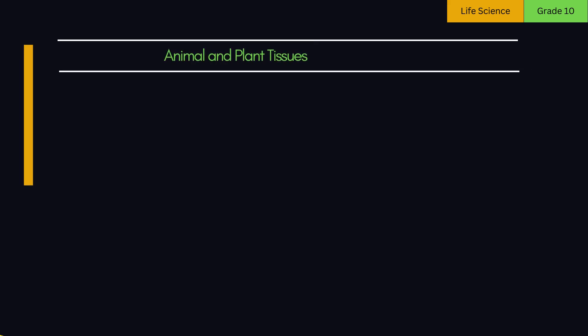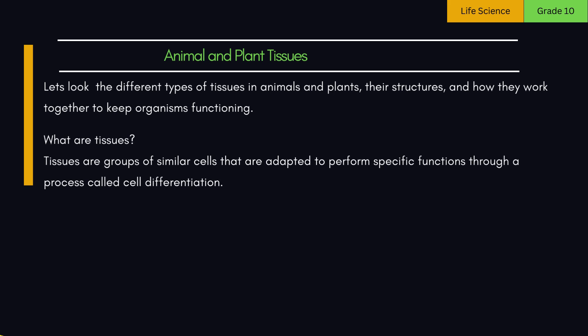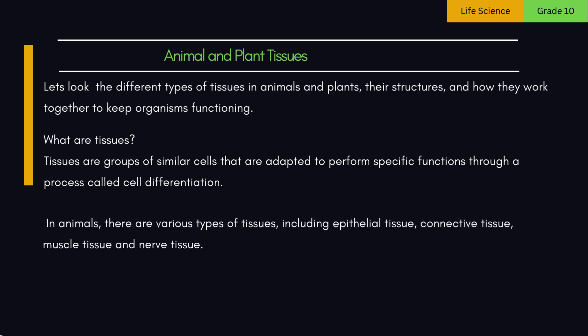Welcome to this educational video on animal and plant tissues. In this video, we'll break down the different types of tissues in animals and plants, their structures, and how they work together to keep organisms functioning. Tissues are groups of similar cells that are adapted to perform specific functions through a process called cell differentiation. In animals, there are various types of tissues including epithelial tissue, connective tissue, muscle tissue, and nerve tissue.